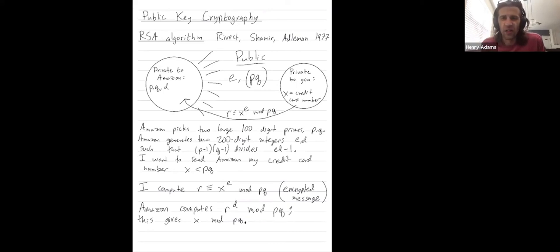Welcome, folks. I want to explain one other result that we'll need when we explain why Amazon's decryption method in the RSA crypto system works to recover your credit card number. So this is an important theorem in its own right, and it's called Fermat's theorem.